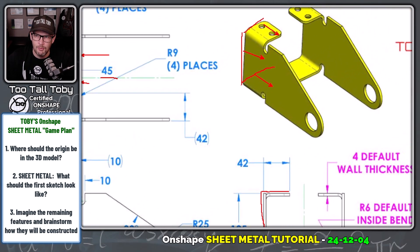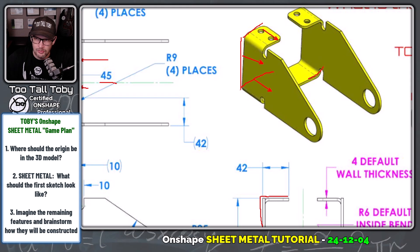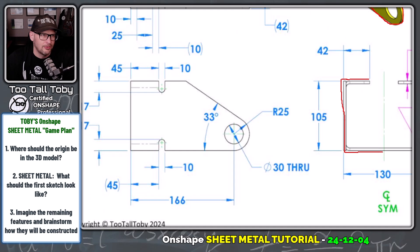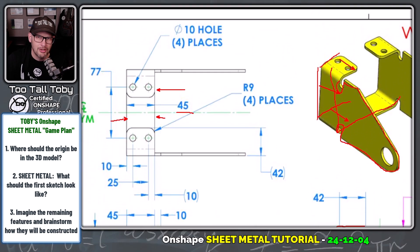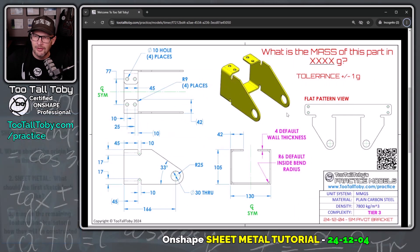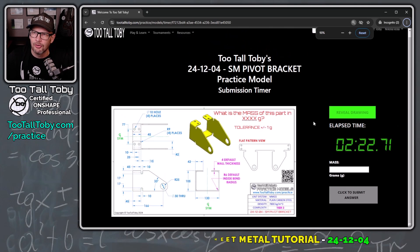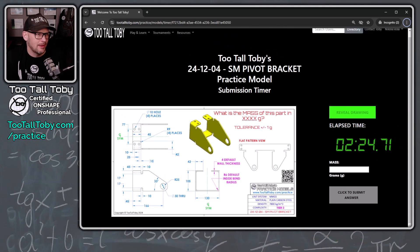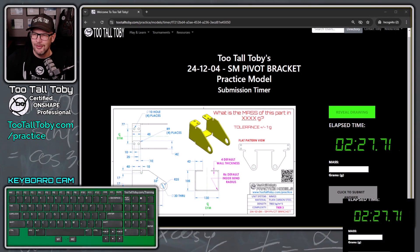Once we create that initial extrusion, the next thing we can do is create this sketch for this little tab area, with dimensions shown in the front view. Once we have that side panel created, we're pretty much done with this model. There are just a few final features: we have to create the holes at 10 millimeters, create the fillets, and then mirror the whole thing right across that center line, calculate the mass, and we're good to go. I know it took a couple of minutes to come up with that game plan, but it's really important before you get started. Now let's get into the modeling process.